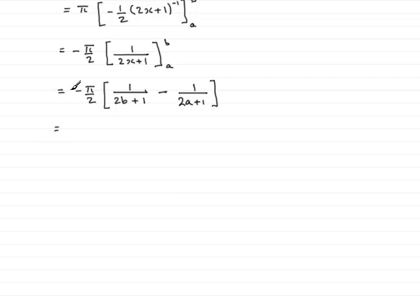So what I don't like is this minus out here, so I'm going to multiply through by minus, so that would just mean that I would have pi over 2. So this term would become a negative term, this term would become a positive term, so really what that's going to mean is that they just switch places, so we have 1 over (2a plus 1) minus 1 over (2b plus 1).